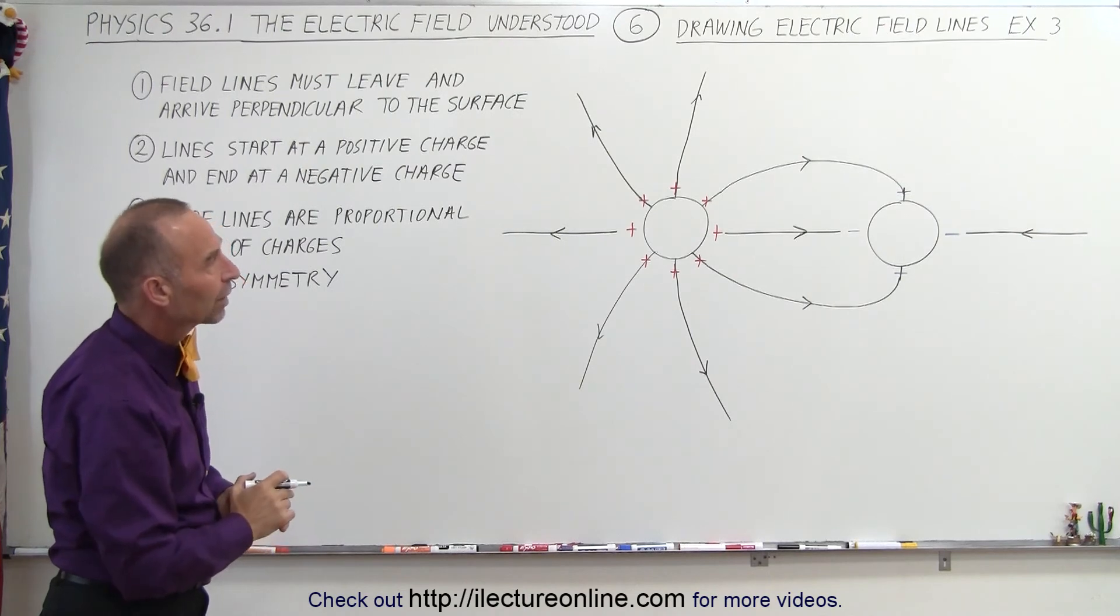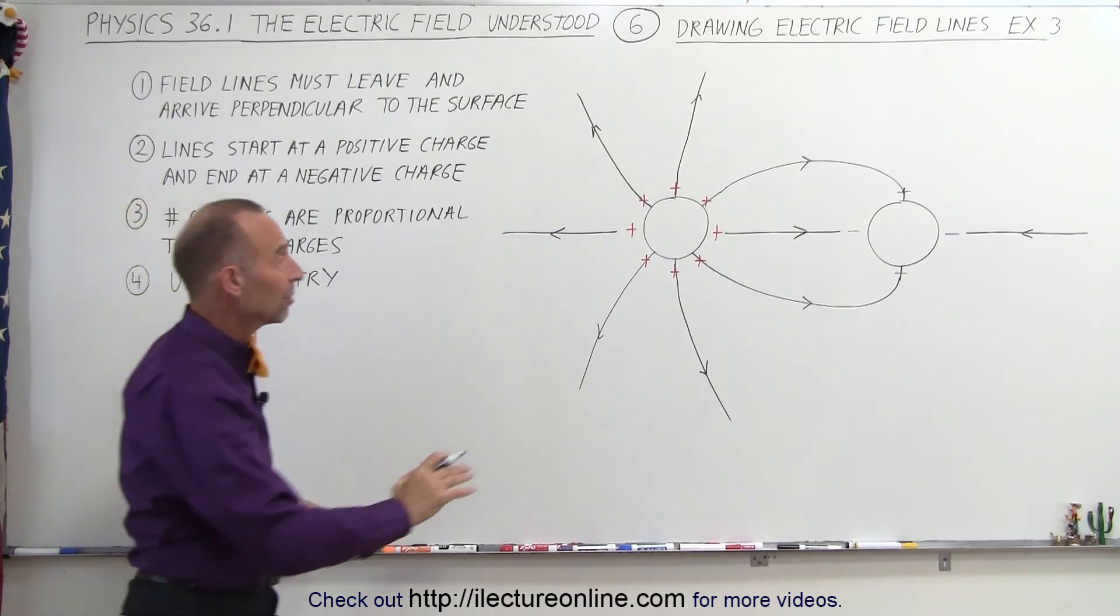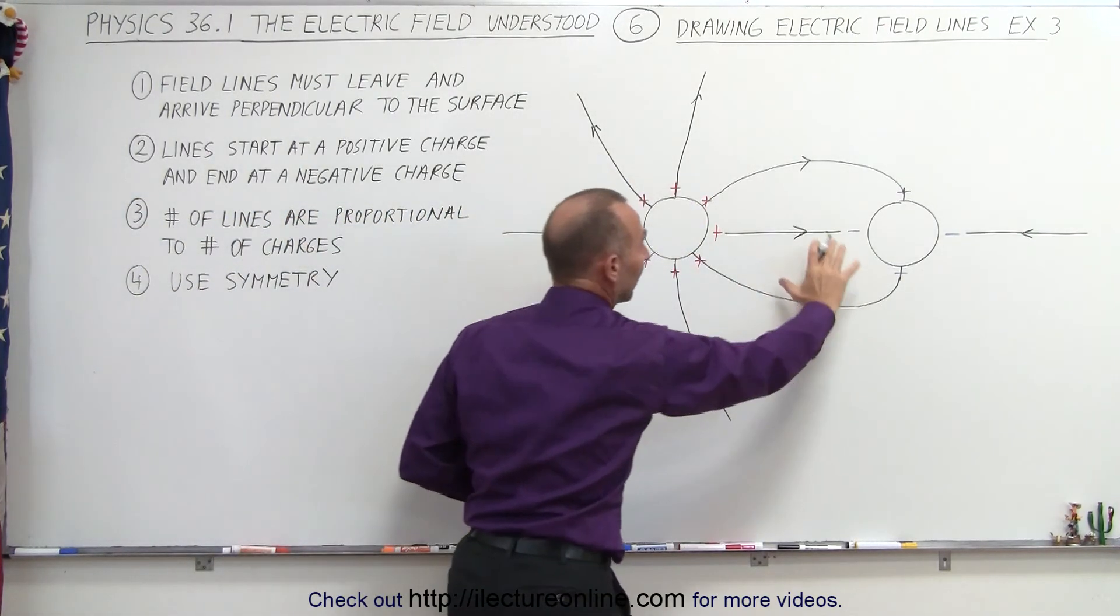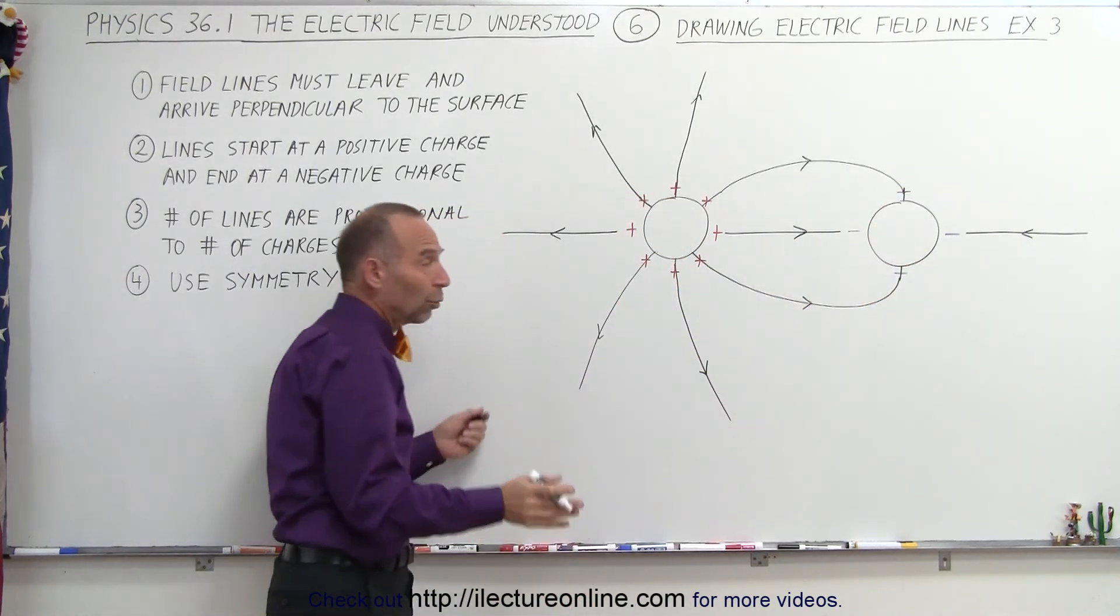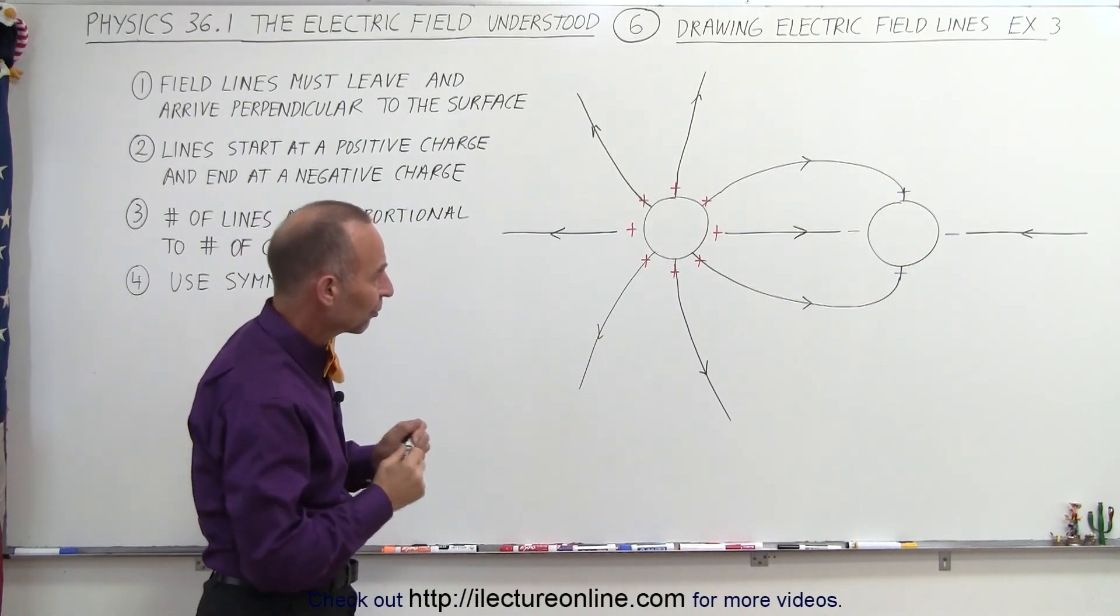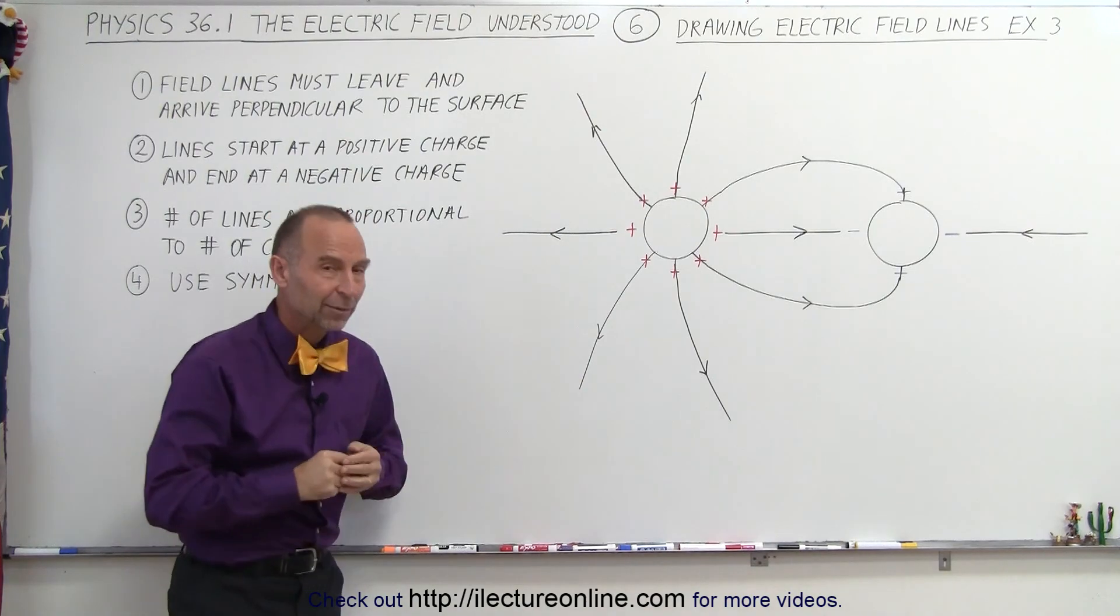But that will be pretty well what the electric field will look like in the case that you have more positive charge on one side and less negative charge on the other side. Or it could be in reverse, and then you would have the drawing in reverse, of course. And that's how it's done.